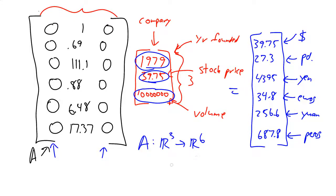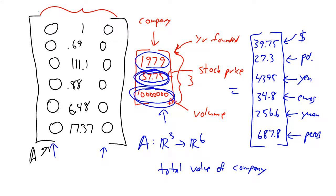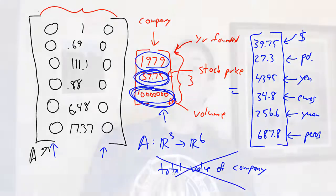Notice we could not compute the total value of the company — stock price times volume — with this approach, because that requires multiplying two elements together, which is not a linear operation. In summary, a linear transformation is simply another way of looking at a matrix. Every matrix can act as a left-multiplier of an appropriately sized vector, producing a vector of another size and computing any linear function of those elements.